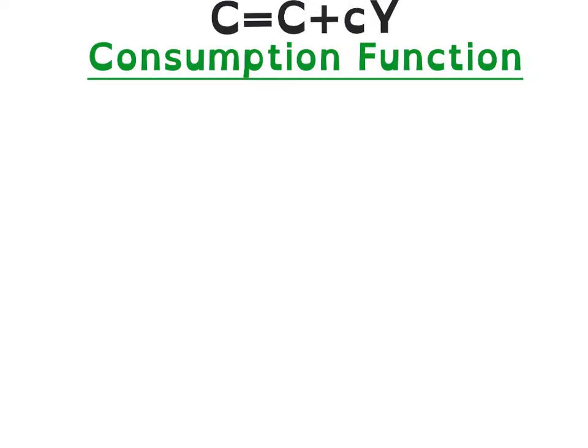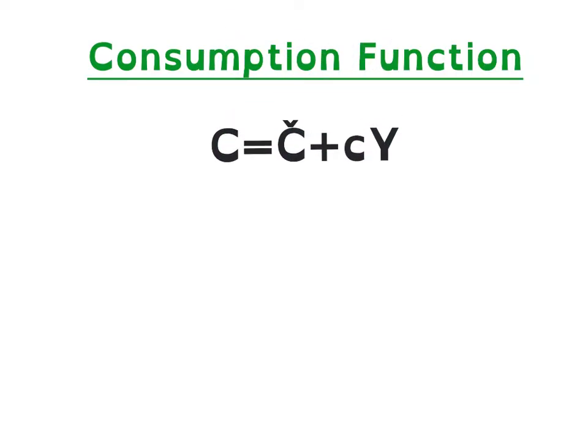The consumption function. The formula is C equals to C̄ plus cY. This is our autonomous consumption plus small c Y. c is our marginal propensity to consume.